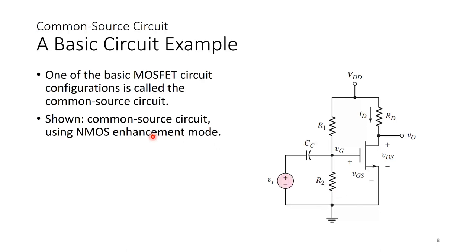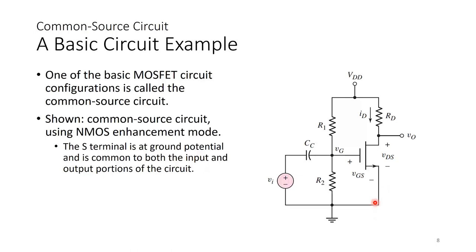This is a common source circuit with an NMOS enhancement mode device. We have R1, R2, RD, and then VGS and VDS. I can modify this circuit and add an external RD and external RS. The approach is still the same. The source terminal is at ground potential and is common to both the input and output portions of the circuit — input is between gate and source, output is between drain and source.